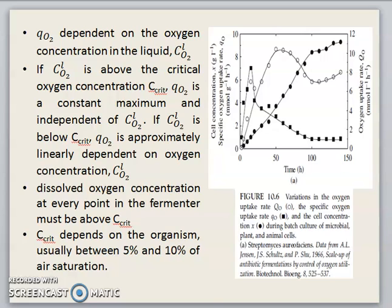As mentioned in the previous lecture, C_critical must be between 5% to 20%, normally around 10%. So C_critical depends on the organism — usually between 5% and 10% of air saturation — and is mostly taken as 10%.